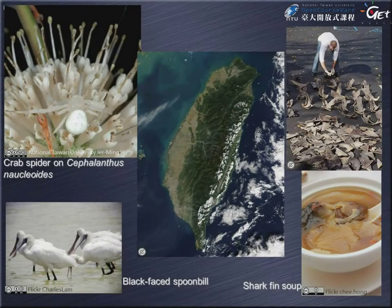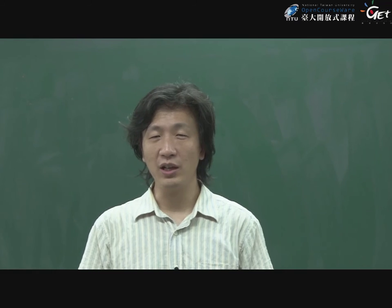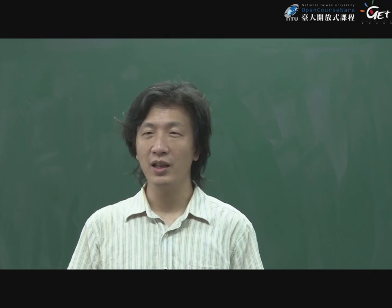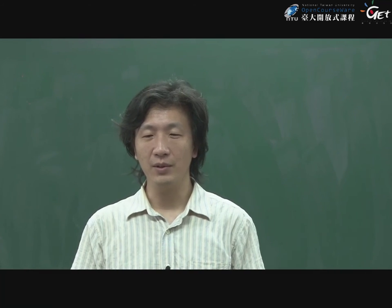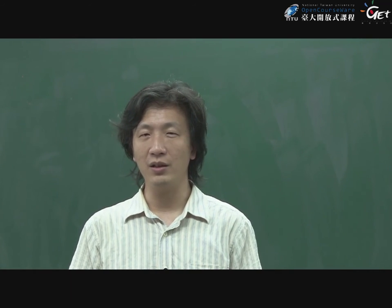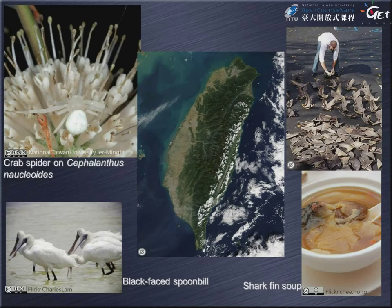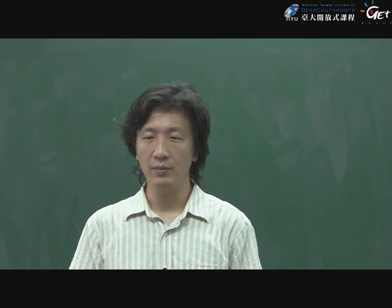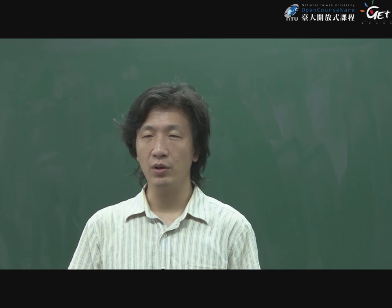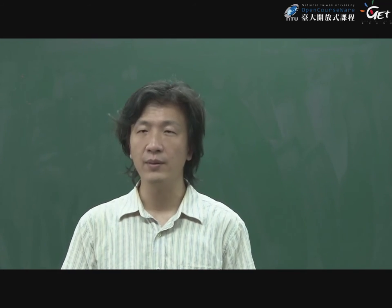One of the issues is shark fin soup, as you can see in the market. Although some of the soup nowadays actually uses fake fin, not real shark fin, this is still a major issue for preserving biodiversity in Taiwan. But before we talk about biodiversity in Taiwan specifically, we have to talk about some general issues about biodiversity itself.